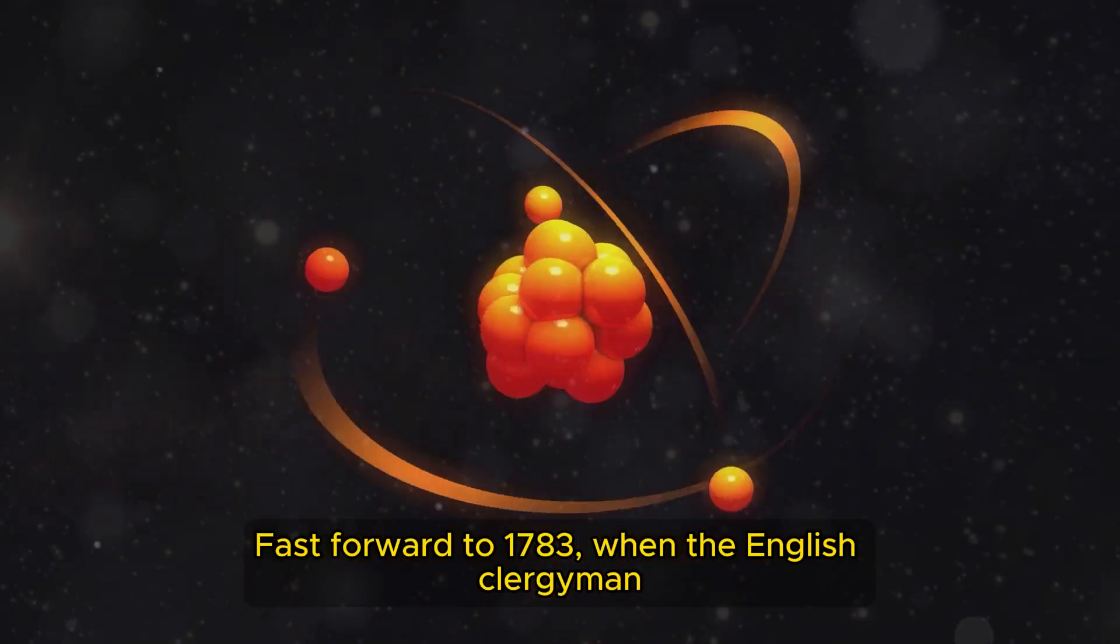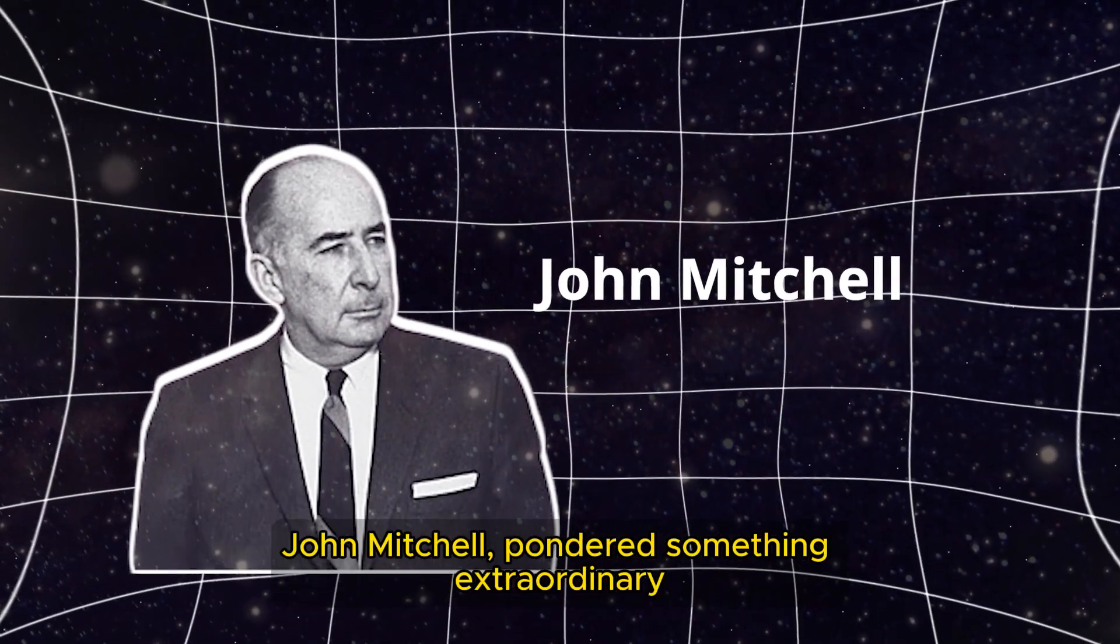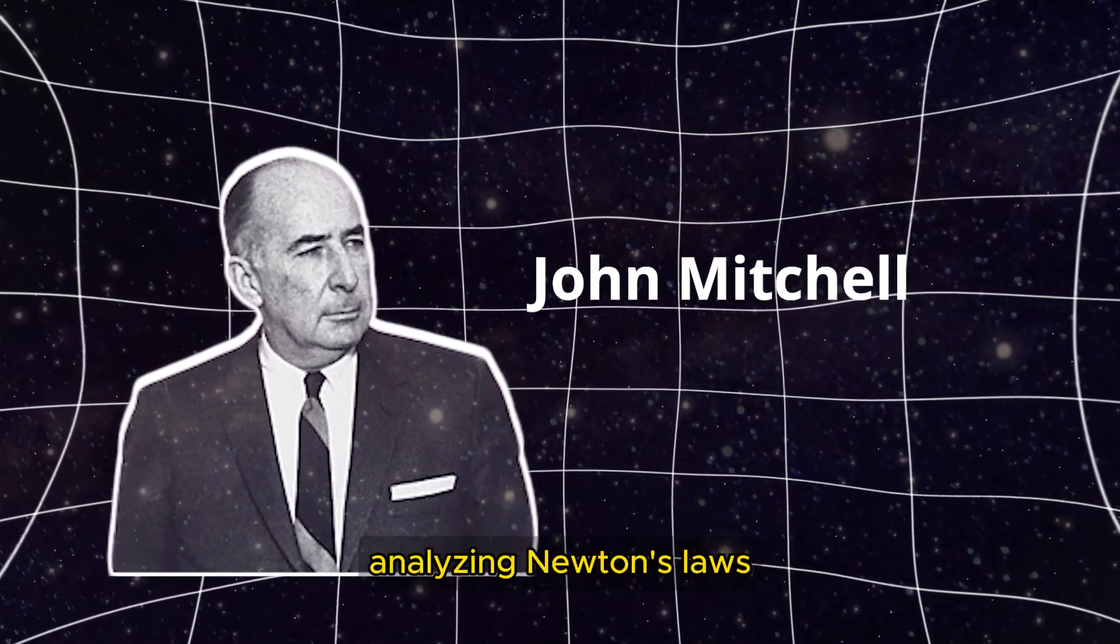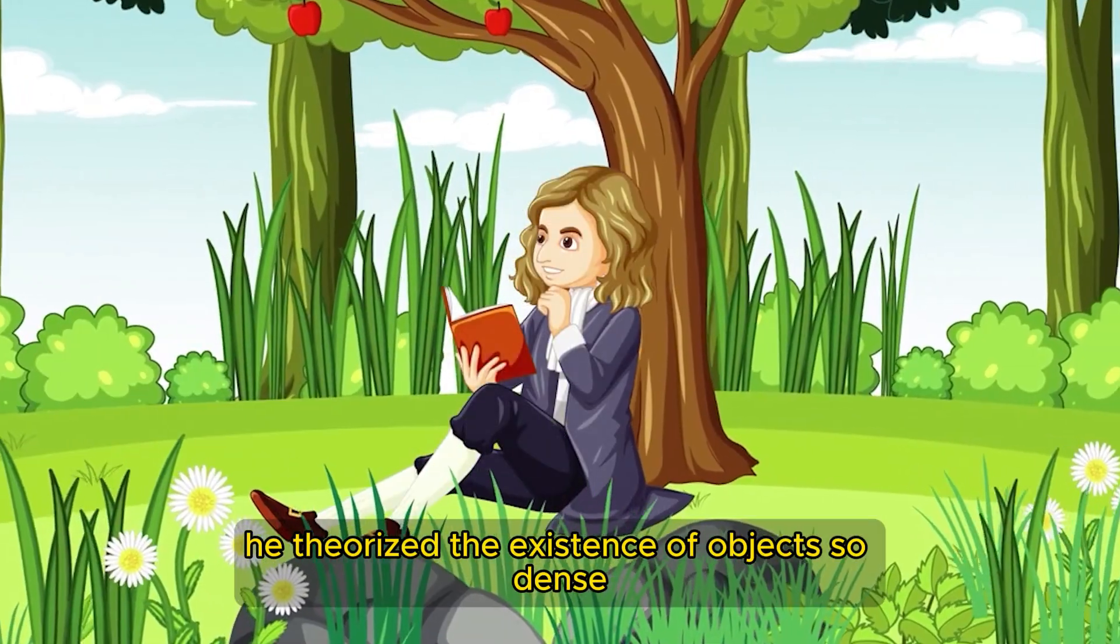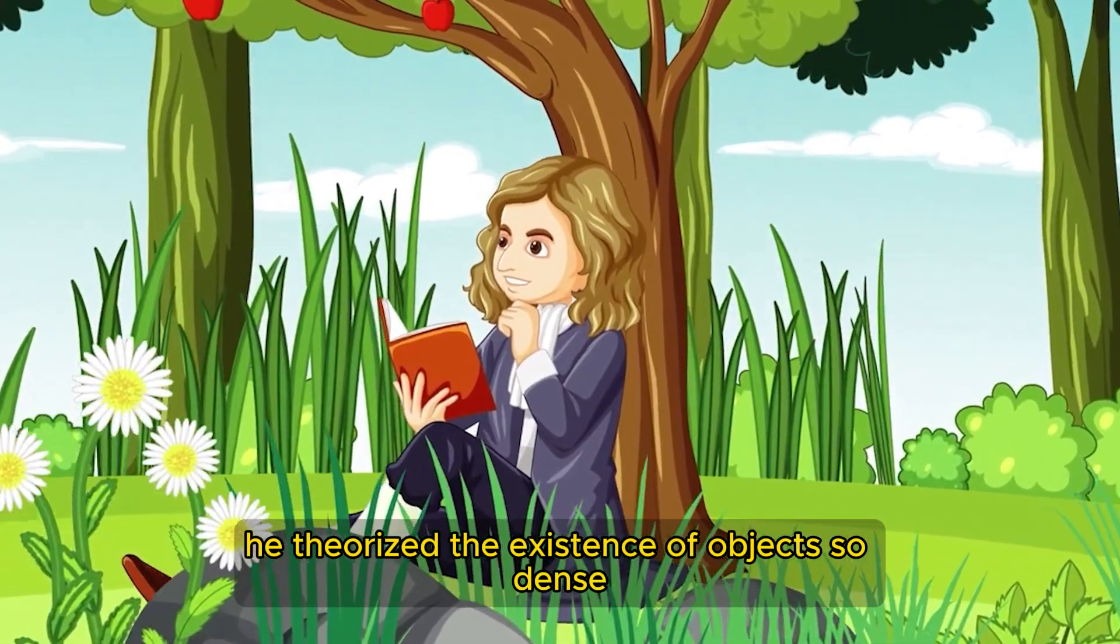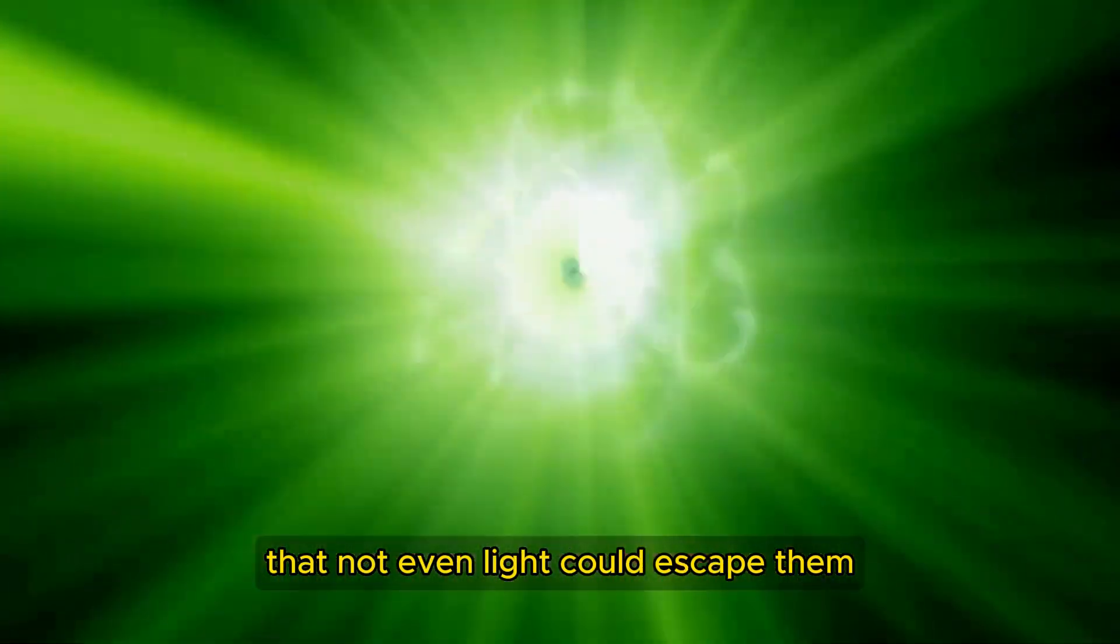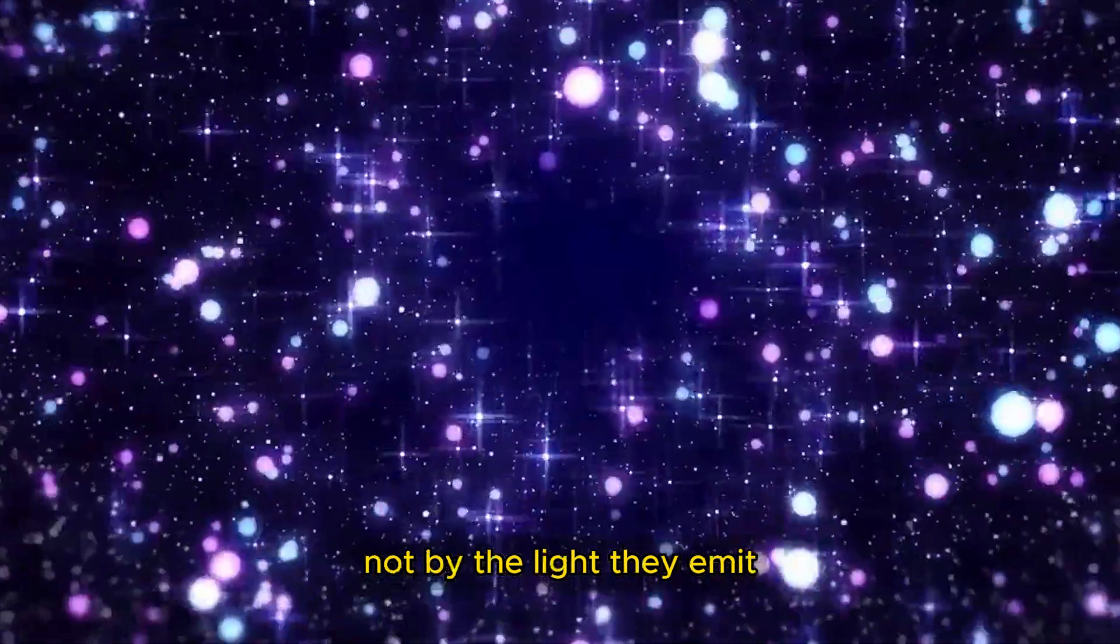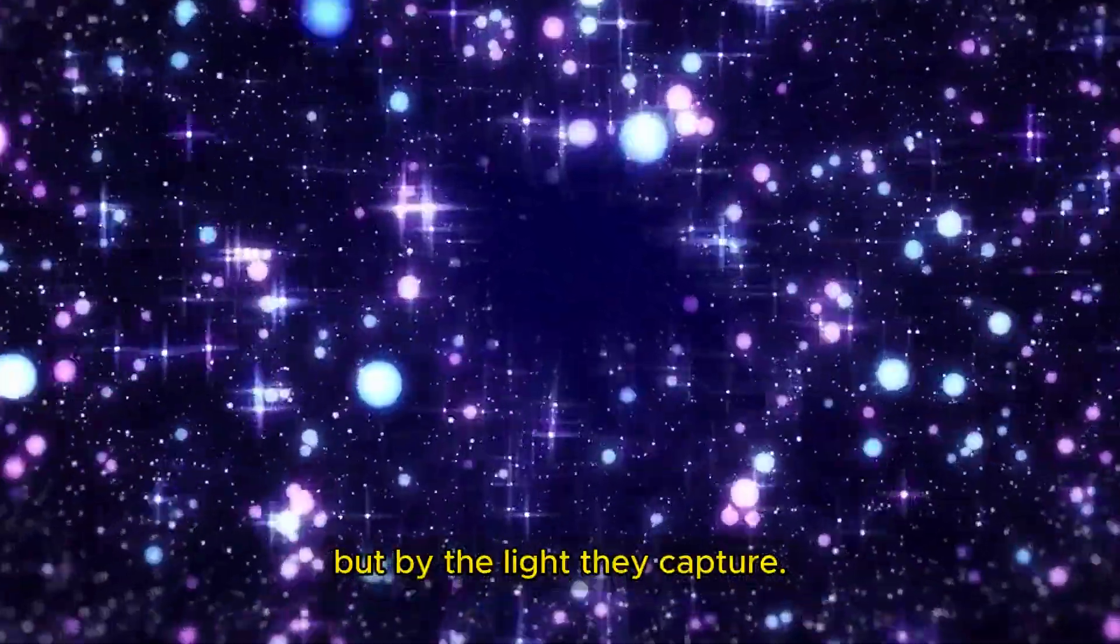Fast forward to 1783, when the English clergyman John Mitchell pondered something extraordinary. Analyzing Newton's laws, he theorized the existence of objects so dense that not even light could escape them. Just imagine, stars that are visible not by the light they emit, but by the light they capture.